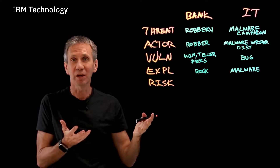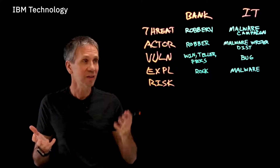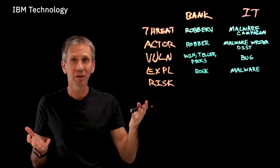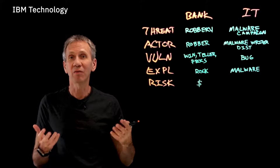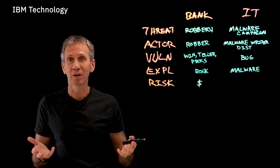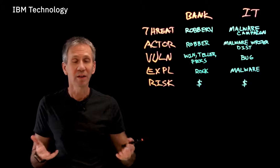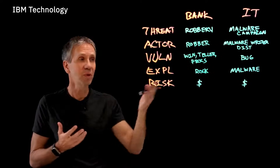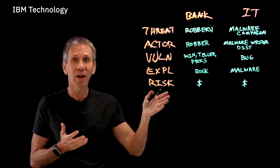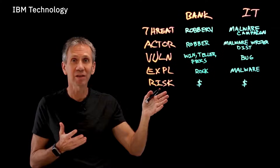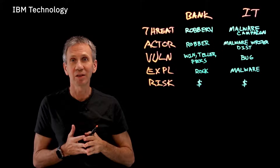Then we have risk. Risk is essentially quantifying the issue: What's the likelihood this will happen? What's the cost if it does happen? What's the probability? What's the frequency? Those are the considerations for risk, and they apply both in the bank example and in the IT example.